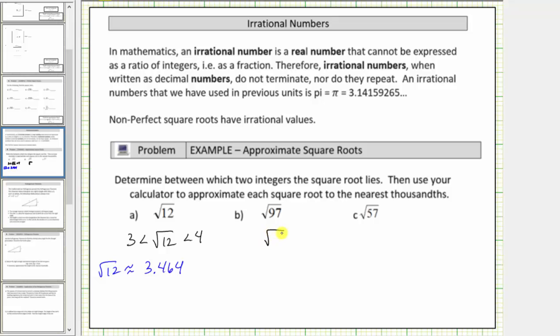Next we have the square root of 97. Well, the square root of 81 is equal to 9, and the square root of 100 is equal to 10. Because 97 is between 81 and 100, we know the square root of 97 is between 9 and 10. Now we'll get our decimal approximation.